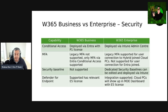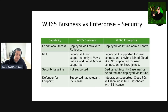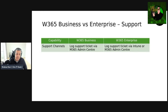Now let's talk about security. For conditional access capability: from a Business perspective it's deployed via Entra with a P1 license, and from an Enterprise perspective it's deployed via the Intune admin center. For MFA: with Business, legacy MFA is not supported — only MFA via Entra conditional access is supported. With Enterprise, legacy MFA is supported for user connections to hybrid-joined cloud PCs but not for Entra-joined connections. Security baselines are not supported in Business, but with Enterprise, dedicated security baselines can be edited and deployed via Intune — we've already covered that in a prior demo. For Defender for Endpoint, that capability is supported with the relevant E5 license for Business, and for Enterprise, integration is supported and cloud PCs will show up in the Defender for Endpoint dashboard with an E5 license.